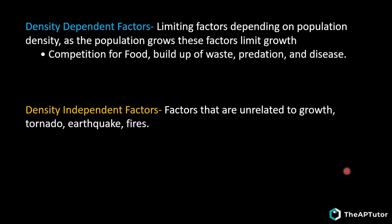Density dependent factors are limiting factors that depend on population density - as population grows, these limit growth. Examples include competition for food, buildup of waste, predation, and disease. Density independent factors don't depend on how many individuals are in the area - like earthquakes and tornadoes, which kill regardless of population size. The key distinction: density independent means the problem is not caused by density, not that deaths are unrelated to the number of individuals.